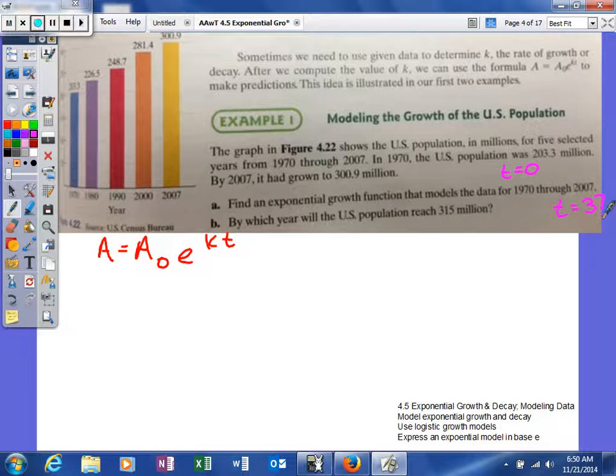A₀, what we're going to plug in for A₀ is our population at the beginning, which is 1970, which in this case will be 203.3. For A, we're going to use the population in the year 2007, so 300.9. And then the rest of the stuff.